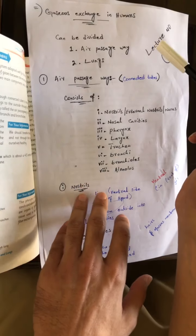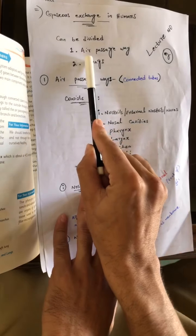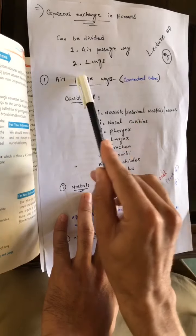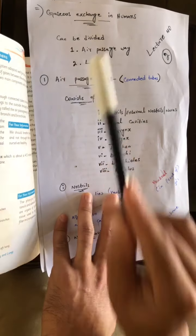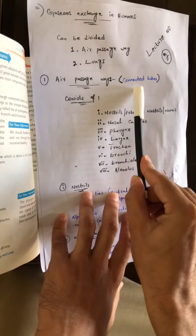The topic is gas exchange in humans. Gas exchange in humans can be divided into two stages. The first one is known as air passageways, while the second one is known as lungs. First, we will come to air passageways.